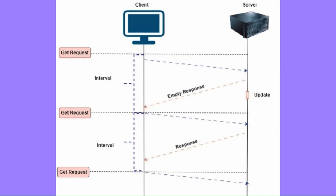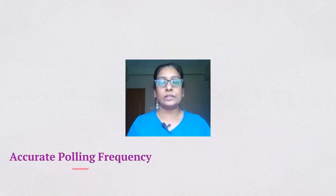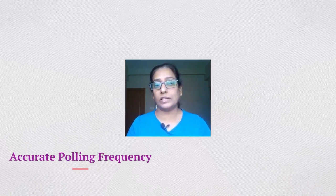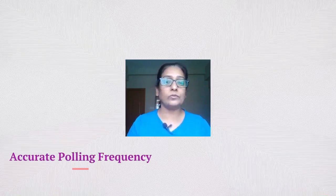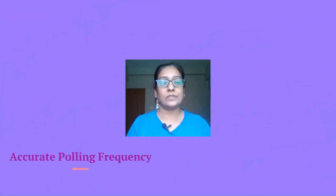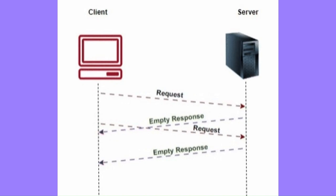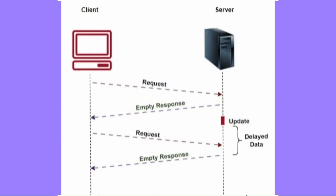As you can see in the figure, even though the update is available, the client requests only at the specified interval, thereby delaying the data retrieval. Short polling works well when the information availability timeframe is known well in advance, so that the polling frequency can be set accurately. If the polling frequency is not accurate, it has drawbacks like unnecessary requests to the server when updates are not available, or delayed data retrieval when updates are available at the server but the client has not yet requested.